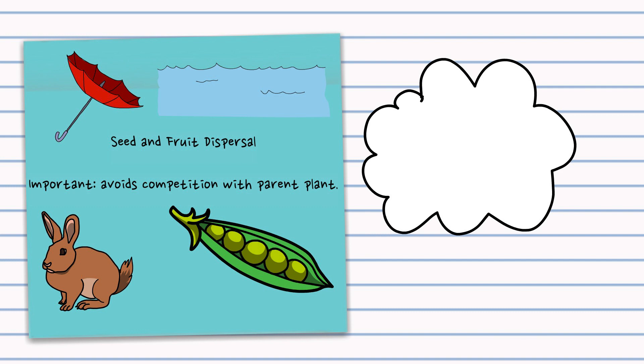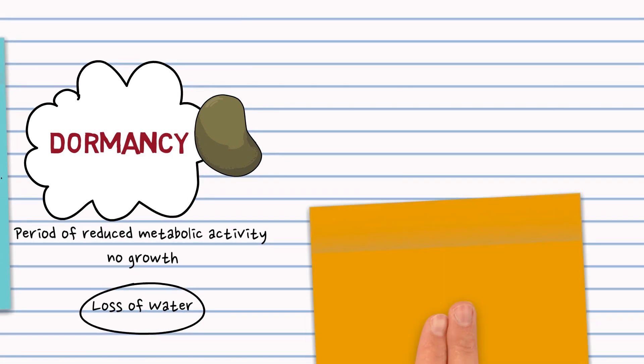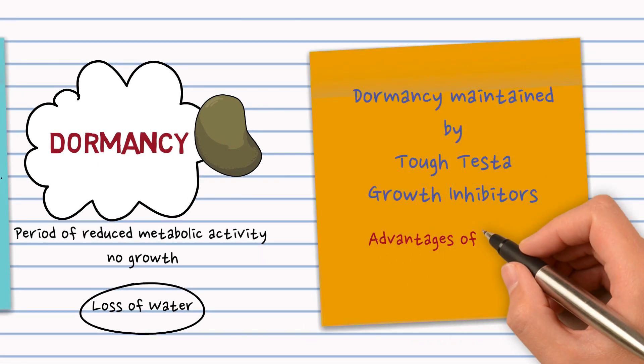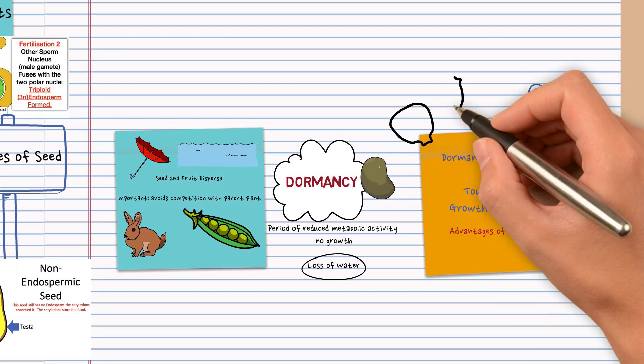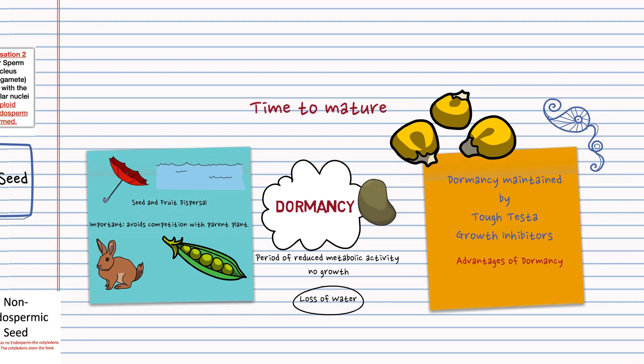So following dispersal the seeds enter dormancy. Dormancy is this period of reduced metabolic activity where the seed undergoes no growth and it's kicked off by a loss of water, the seed losing its water. Dormancy is maintained by seeds having a tough testa and the presence of growth inhibitors and there are important advantages to it as well. For example, it can ensure a seed bank and it also gives the embryo plant time to mature.